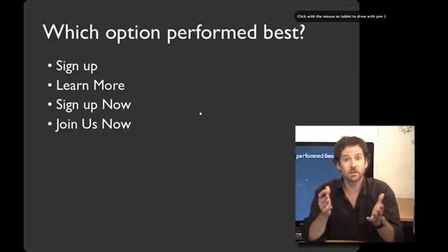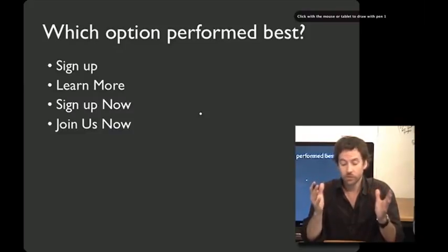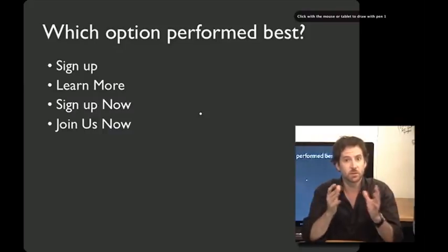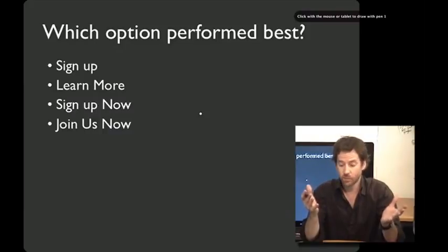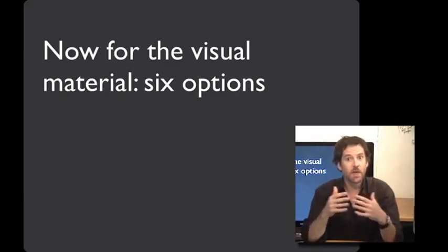Dan found a pretty significant difference in sign-up rates for these four small changes in button text. The baseline rate for 'Sign up' was 7.51%. For 'Learn more,' it jumped to 8.91% — which may not sound like a giant difference, but that's an 18.6% increase, and over the giant numbers of visitors to a site like this, that translates into a huge difference in revenue. 'Sign up now' performed basically the same as 'Sign up' at 7.52%, and 'Join us now' did slightly worse. Dan and his team also explored six different variations of the homepage: three different images and three different videos.